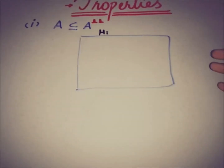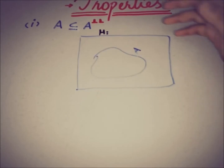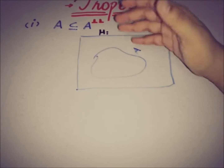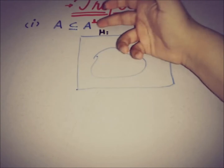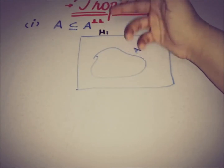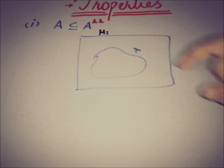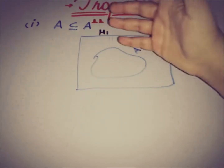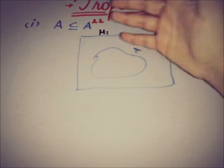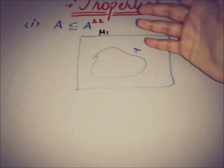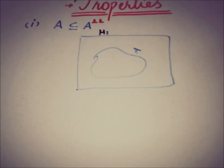If H is a Hilbert space and E is a subset of the Hilbert space, the claim is that the annihilator of the annihilator — the double annihilator — is a superset of A, or we can say that A is a subset of that double annihilator.